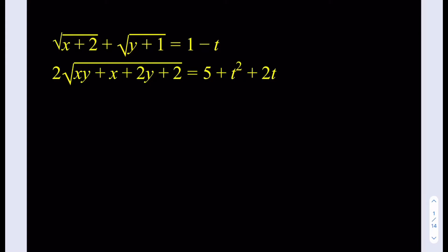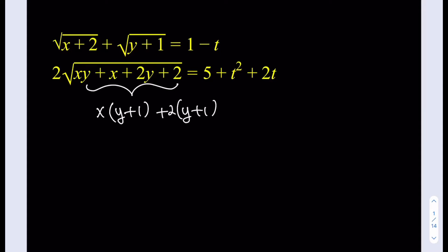We're going to be considering some factoring under the second radical. We have a really nice expression that, if you use grouping, you can factor out an x and factor out a 2. So the expression under the radical can actually be written as (x plus 2) times (y plus 1), which is kind of nice because we also have the same expressions upstairs.